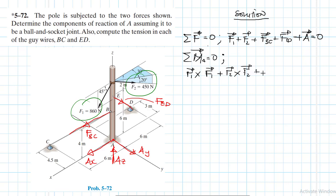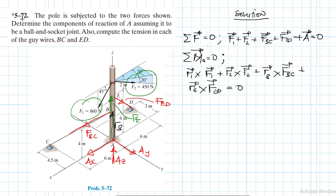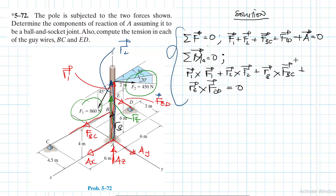For the moment equation, we have: R1 cross F1 + R2 cross F2 + Rb cross FBC + Re cross FED = 0. R1 is the position vector to where F1 is applied, R2 is likewise, Rb is for the point B, and Re is for point E. These are the two main equations we will use.